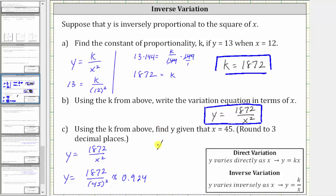So now we know y is approximately 0.924 given x equals 45. I hope you found this helpful.